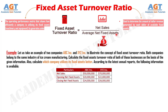Let's take an example to understand the calculation of the fixed asset turnover ratio in a better manner. Let us take the example of two companies, ABC and XYZ, to illustrate the concept. Both companies belong to the same industry of ice cream manufacturing. Calculate the fixed assets turnover ratio of both businesses, and also calculate which company utilizes its fixed assets better. According to the latest annual reports, the following information is available as we can see on this table.